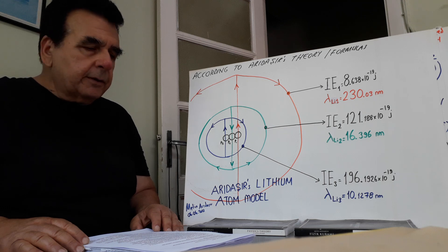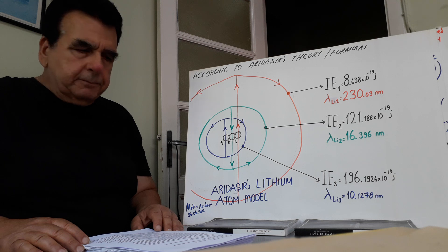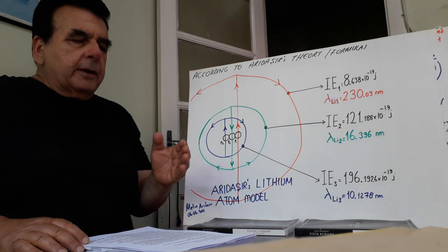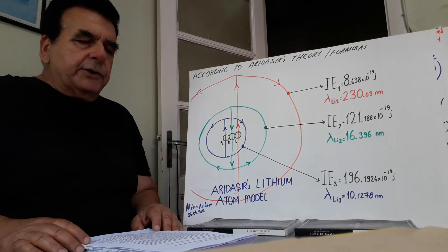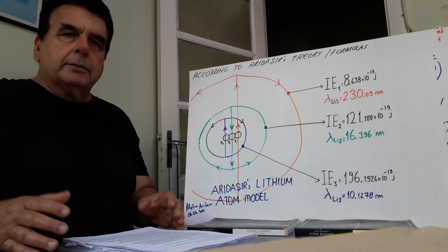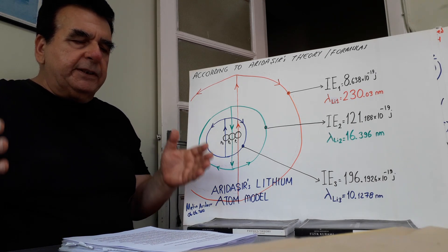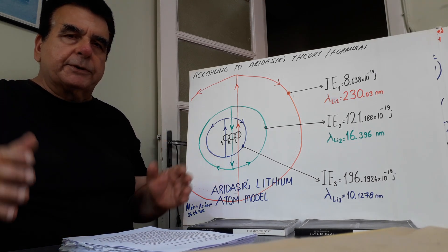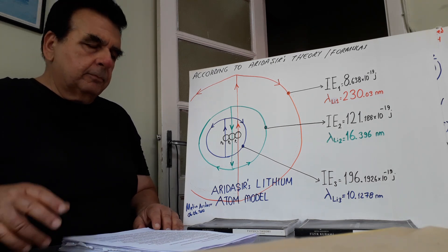E: As the distance from the nucleus increases, electrons gain more energy. F: As the number of shells increases, each electron shell can take more electrons. All of these propositions are wrong.